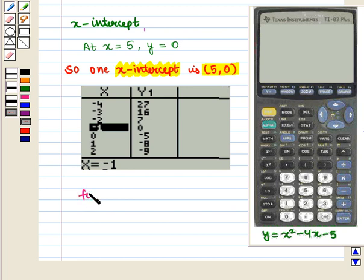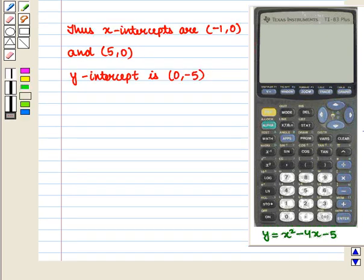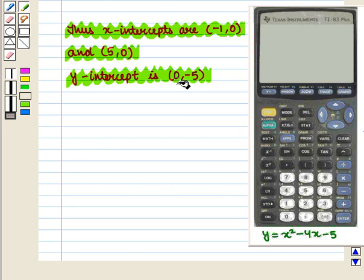Here for x = -1, we have y = 0. So the x-intercepts are given by the ordered pairs (-1, 0) and (5, 0). Also, y-intercept is given by the ordered pair (0, -5).